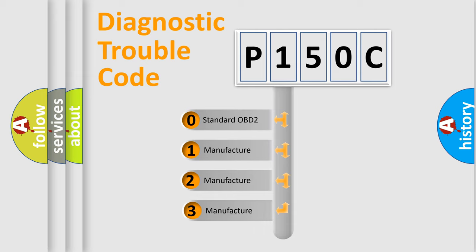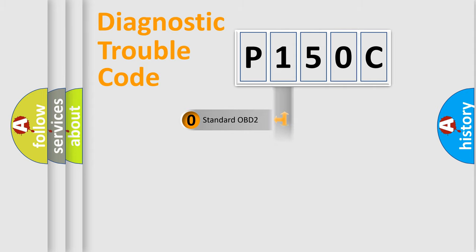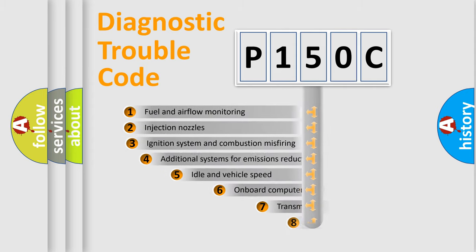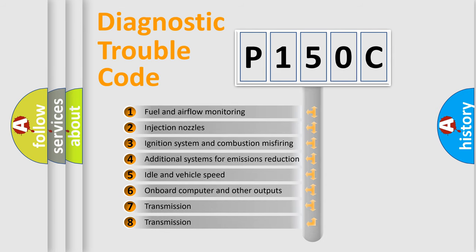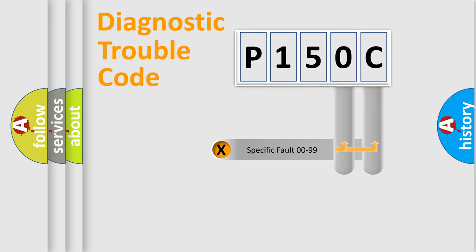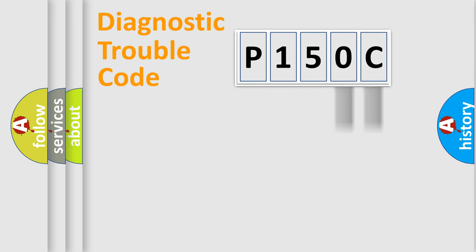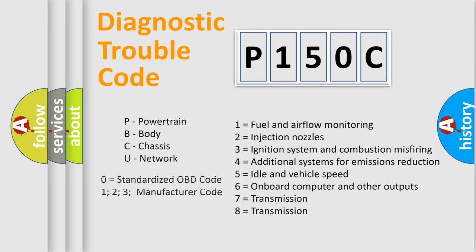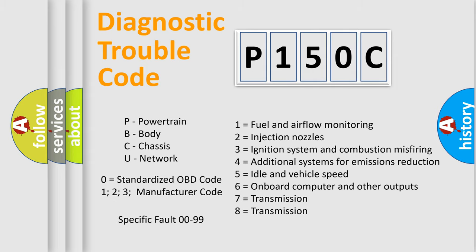If the second character is expressed as zero, it is a standardized error. In the case of numbers 1, 2, or 3, it is a more specific expression of a car-specific error. The third character specifies a subset of errors. This distribution is valid only for the standardized DTC code. Only the last two characters define the specific fault of the group, and this division is valid only if the second character code is expressed by the number zero.